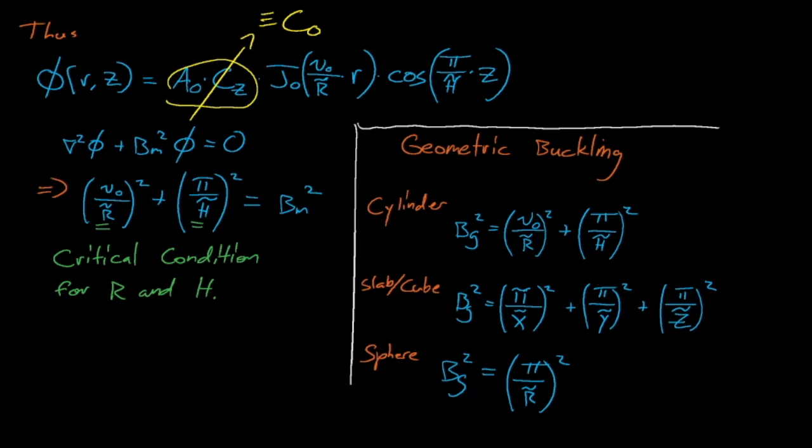One interesting mental exercise is to ponder what the geometric buckling is for a cylinder with an infinite radius. This kind of infinitely wide cylinder is actually indistinguishable from a slab that extends to infinity in the y and z dimensions. And so it makes sense that as our radius approaches infinity for a cylinder, that our shape will have the same geometric buckling as for a 1D slab.